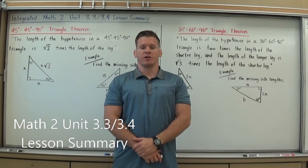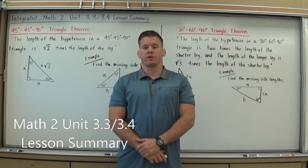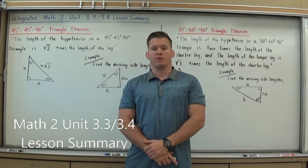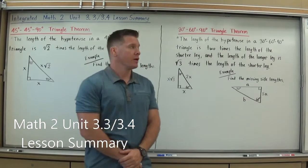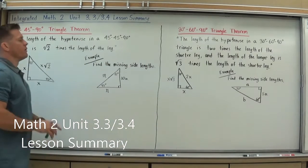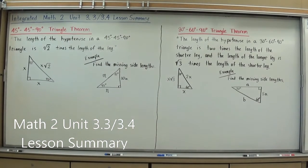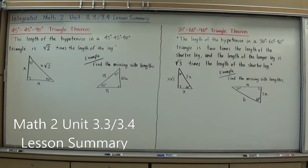Hi, I'm Mr. Richman, and this is your Integrated Math 2, Unit 3.3 and 3.4 Lesson Summary. This will be the end of Unit 3 for us in the book, and in Units 3.3 and 3.4 we're going to look at some special right triangles.